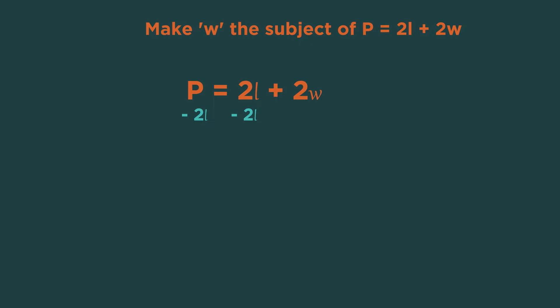Which means the plus 2L minus 2L cancel on this side. Now we want to get W on its own. So we need to move the 2. At the moment it's 2 times W. So the opposite of times is divide.